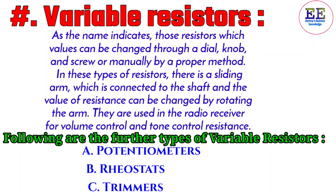Variable resistors. As the name indicates, those resistors whose values can be changed through a dial, knob, screw, or manually by a proper method. In these types of resistors there is a sliding arm connected to the shaft, and the value of resistance can be changed by rotating the arm. They are used in radio receivers for volume control and tone control resistance.